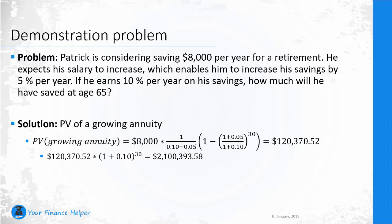However, we need to find the future value of that amount. We compound it using the standard future value formula for a single cash flow over 30 years at an interest rate of 10%. So $120,370.52 multiplied by 1.10 to the power of 30 gives us $2,100,393.58.